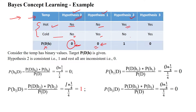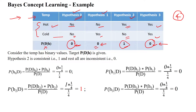Hypothesis 2 has hot: yes, cold: no, and D given H2 is 1, meaning consistent. Hypothesis 3 has hot: yes, cold: yes, and D given H3 is 0, meaning inconsistent. So among the four hypotheses, only hypothesis 2 is consistent because its value is 1; the remaining are all inconsistent.